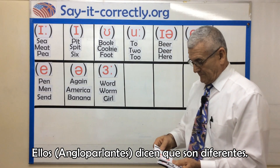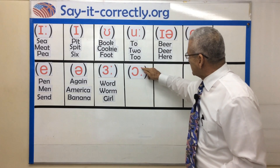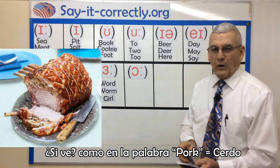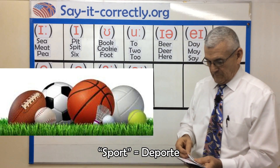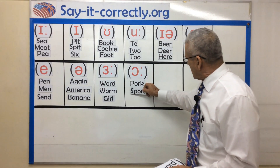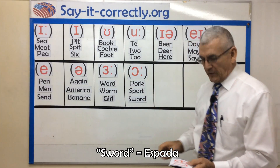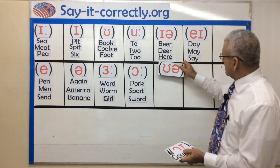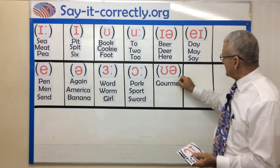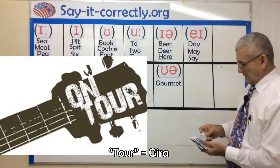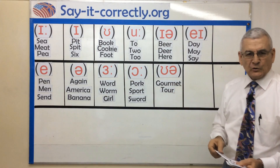They say they're different. Here — this is the R sound, like in the word pork, sport, sword. And gourmet. The next sound — tour, tourist.